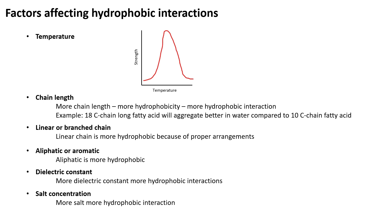What are the factors that affect hydrophobic interactions? The first is temperature — hydrophobic interaction is temperature-dependent. At very low temperature the interaction will be weak, and at very high temperature it will also be weak, so an optimum temperature is required for effective hydrophobic interaction. Next is chain length — greater chain length means greater hydrophobic interaction; for example, an 18-carbon fatty acid will aggregate better in water than a 10-carbon fatty acid. Linear chains are more hydrophobic than branched chains due to their proper arrangement, and aliphatic compounds are more hydrophobic than aromatic compounds.